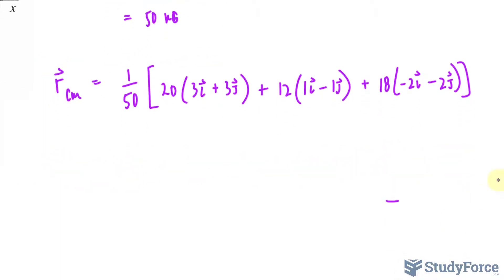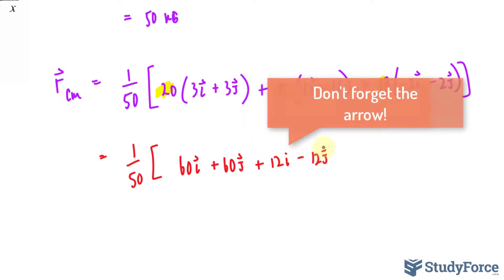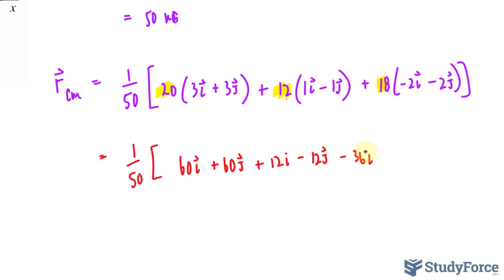Now we will multiply each of these scalar quantities to the vectors. So remember we have 1 over 50 at the outskirt of this equation. 20 times 3 is 60i, 20 times 3 is 60j. This becomes 12i minus 12j, and that will equal minus 36i minus 36j.